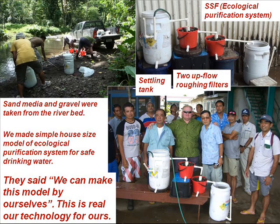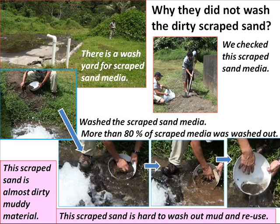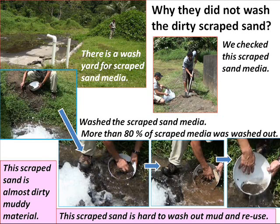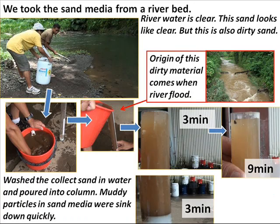This is real appropriate technology for us. Why did they not wash the dirty scrap sand? We washed the scrap sand media — more than 80% of scrap media was washed out. This scrap sand is almost entirely dirty, muddy material and is hard to reuse. We then took sand media from a riverbed where river water is clear. However, even this riverbed sand is also dirty — when we washed the sand in water and poured it into a calm container, muddy particles sank down quickly.